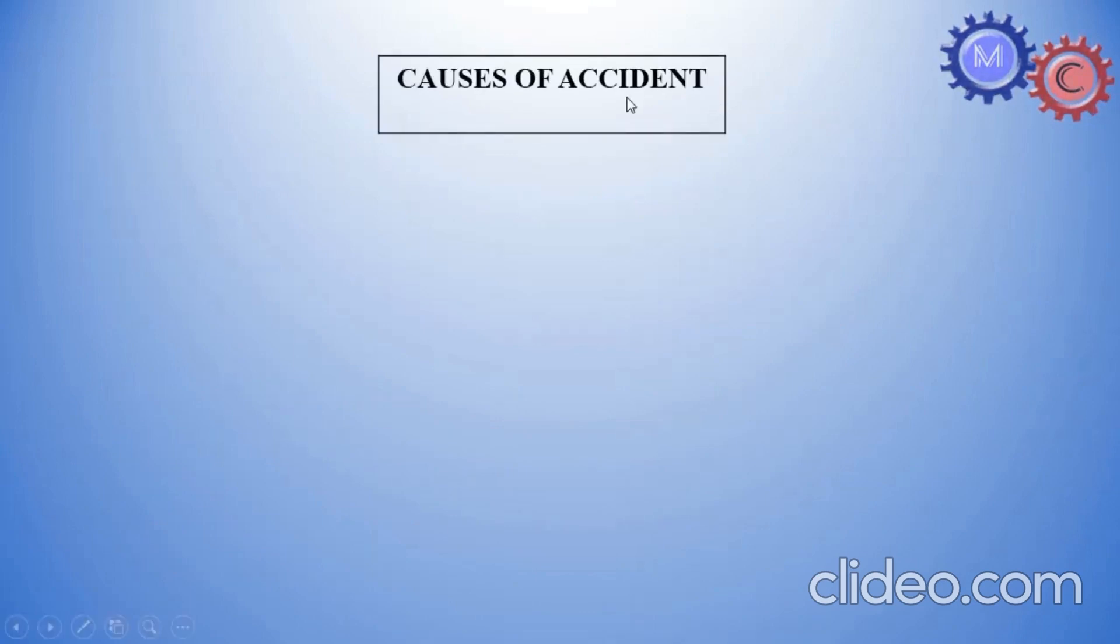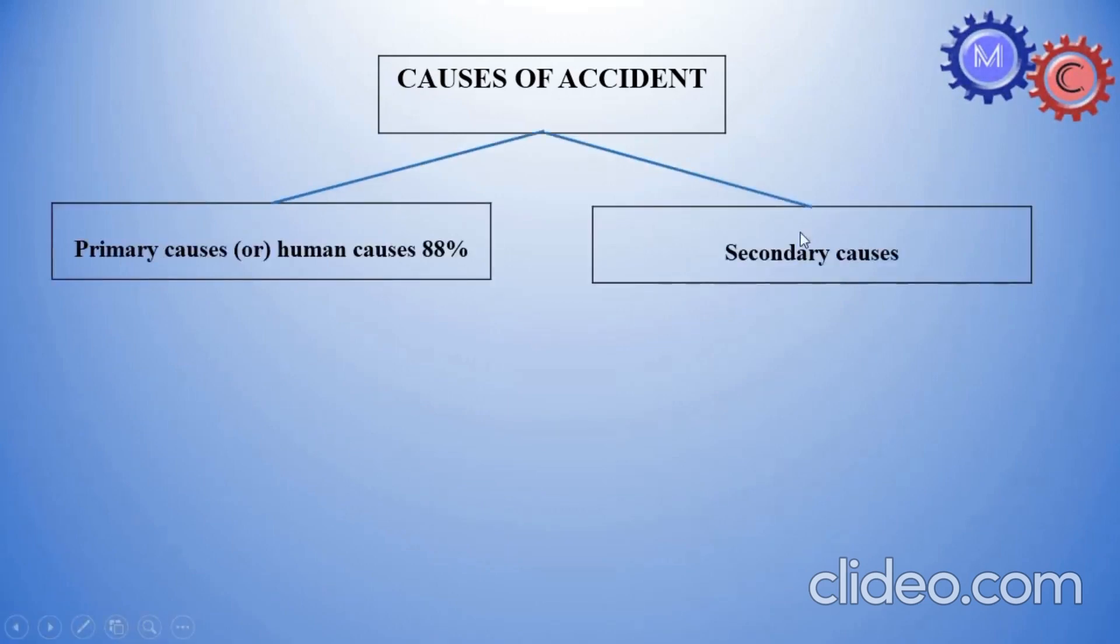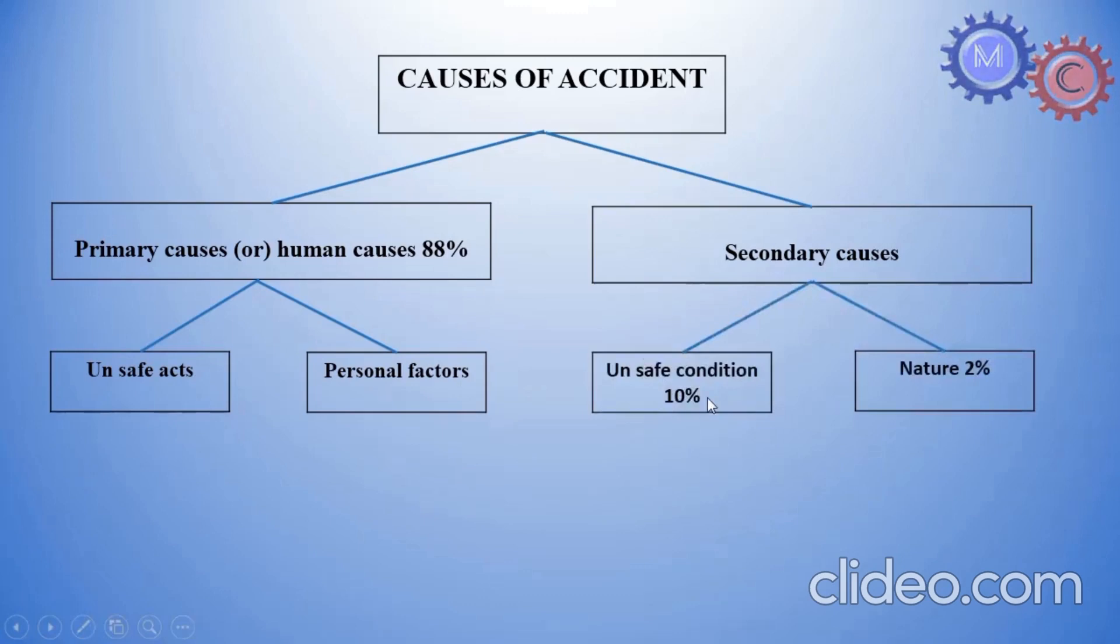Causes of accident. Primary causes, secondary causes. Primary causes: human causes, unsafe act, rules follow panel, unsafe act, personal factor. Unsafe condition: ventilation, lighting. Nature: flood, storm, nature.